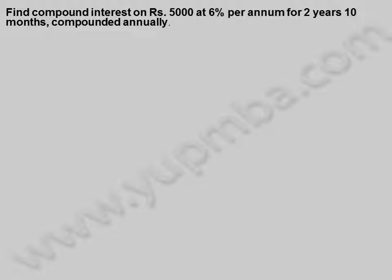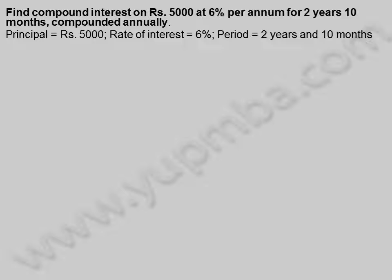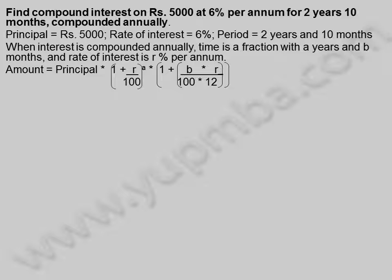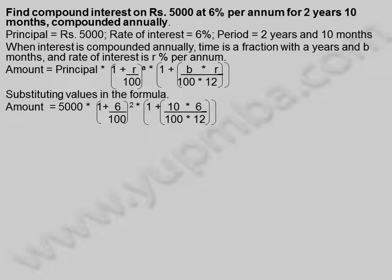Principal is equal to 5,000 rupees, rate of interest is equal to 6%, and period is equal to two years and ten months. When interest is compounded annually and time is a fraction with A years and B months, amount = Principal × (1 + R/100)^A × (1 + B×R / (100×12)).